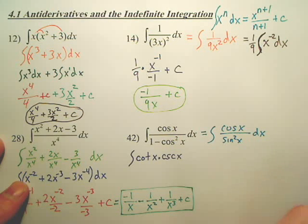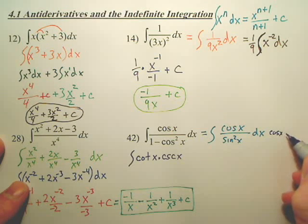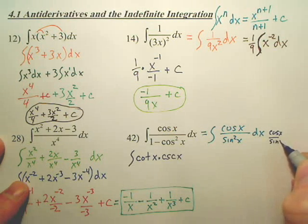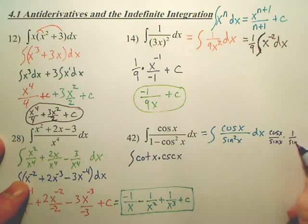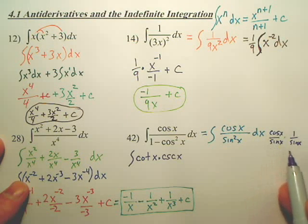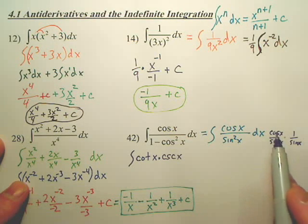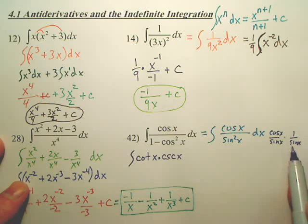Now, that might confuse you, but do you understand what I did is, this is cosine x over sine x times 1 over sine x. I spread it out, that's cotangent, that's cosecant.